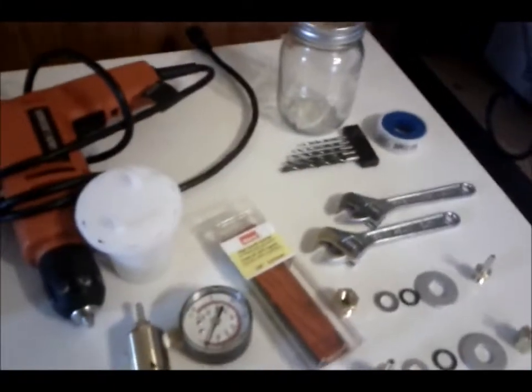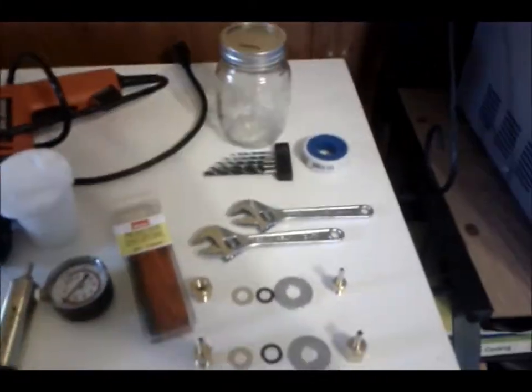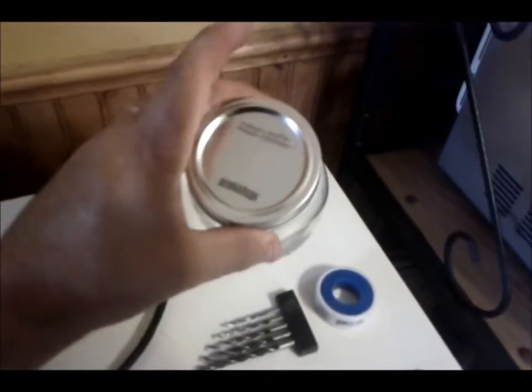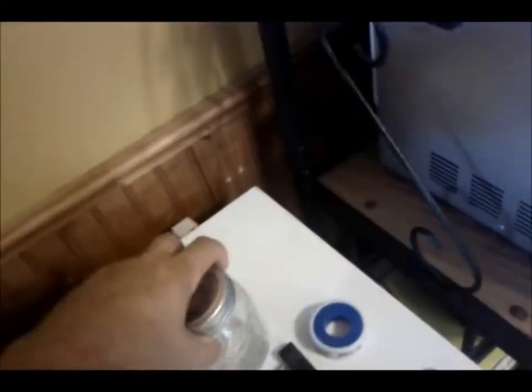We're going to build ourselves a proper vacuum airtight seal jar. Get yourself one mason jar, remove the lid here.